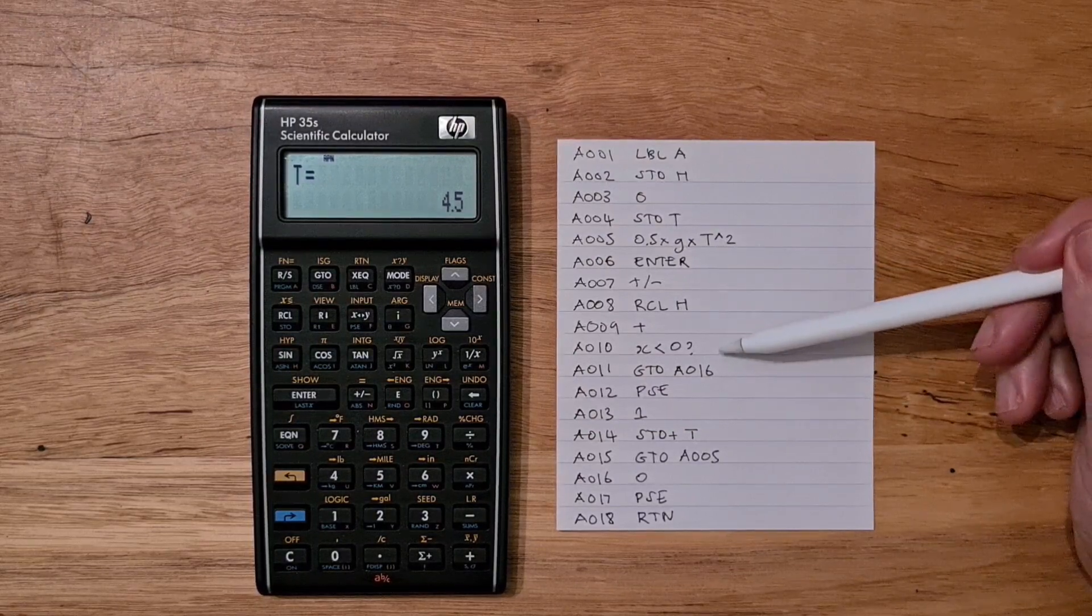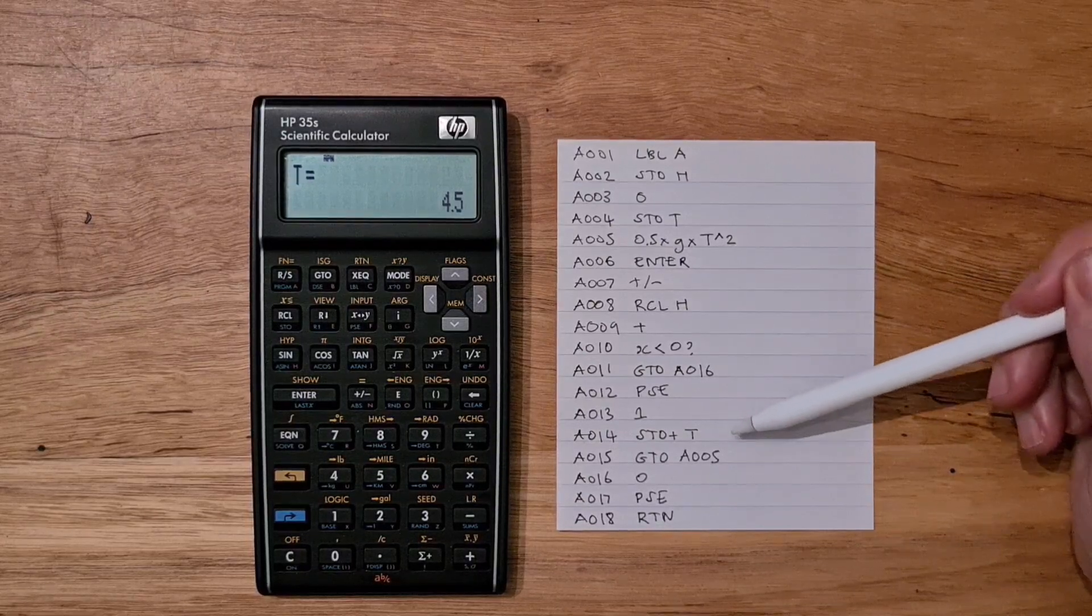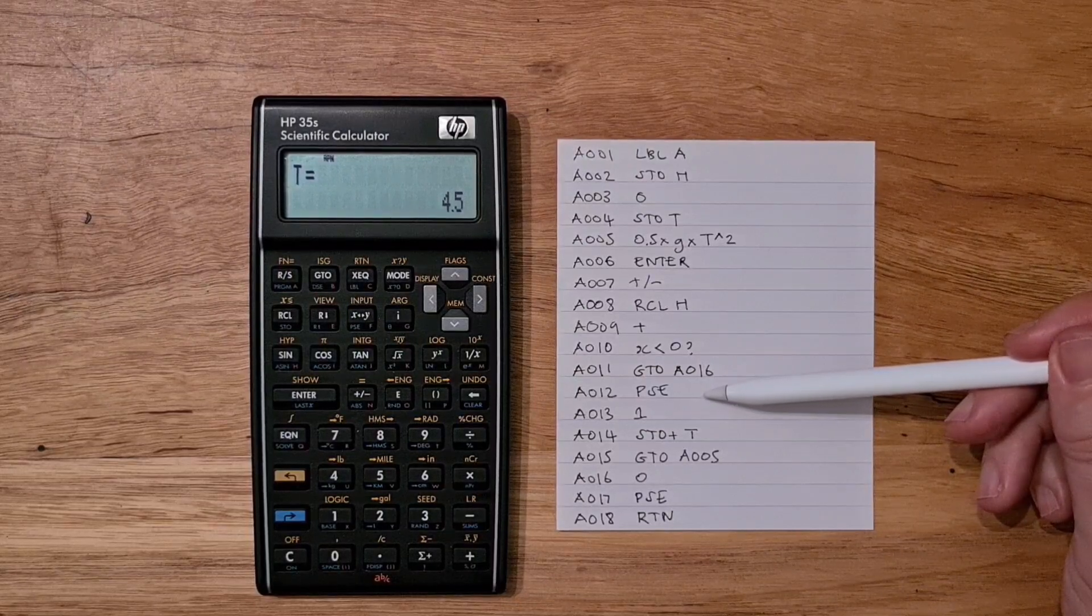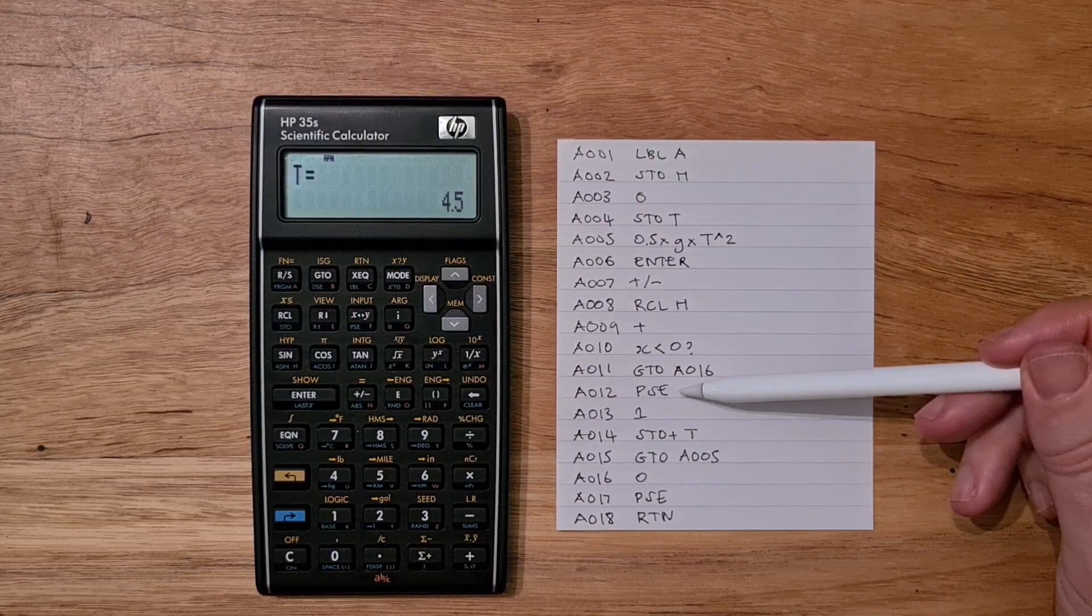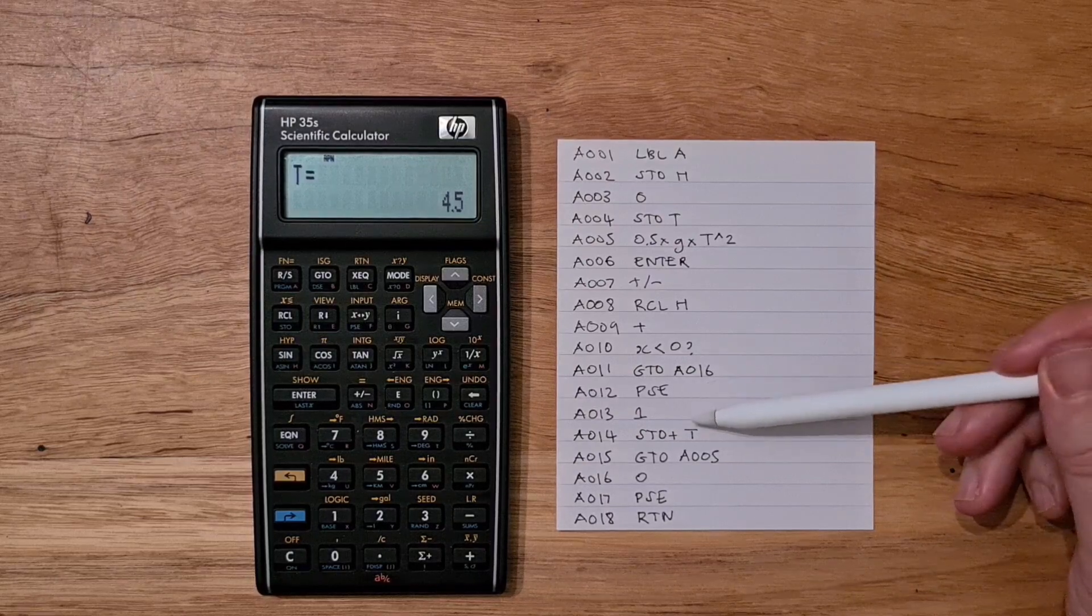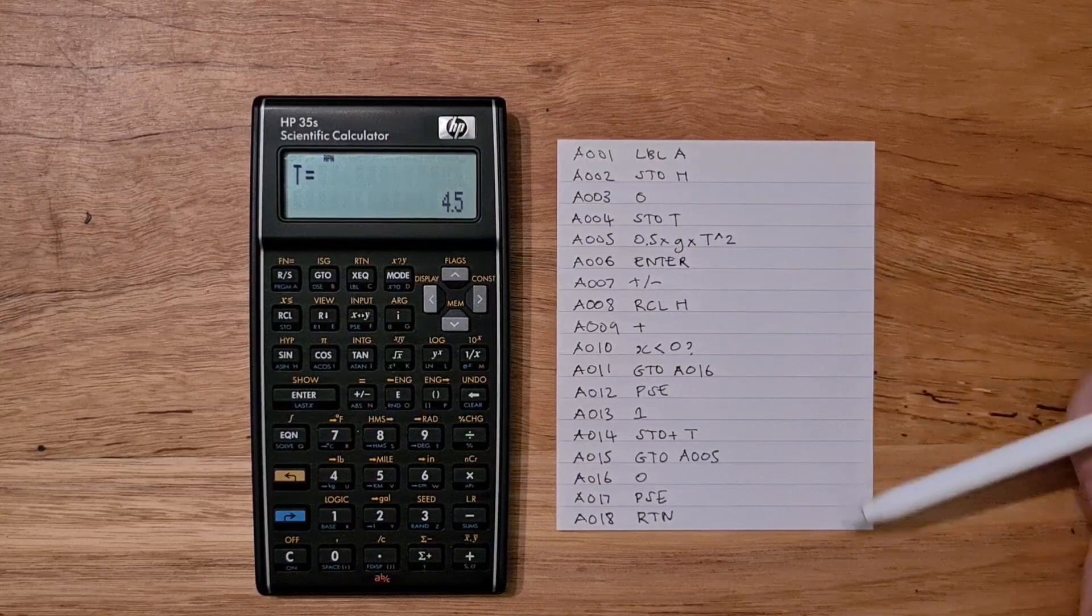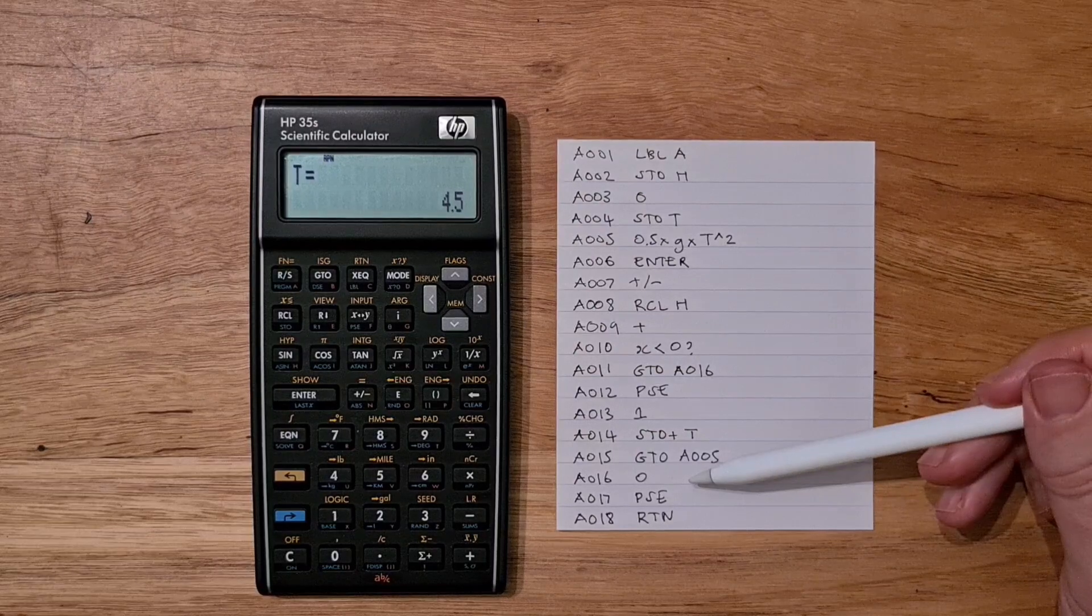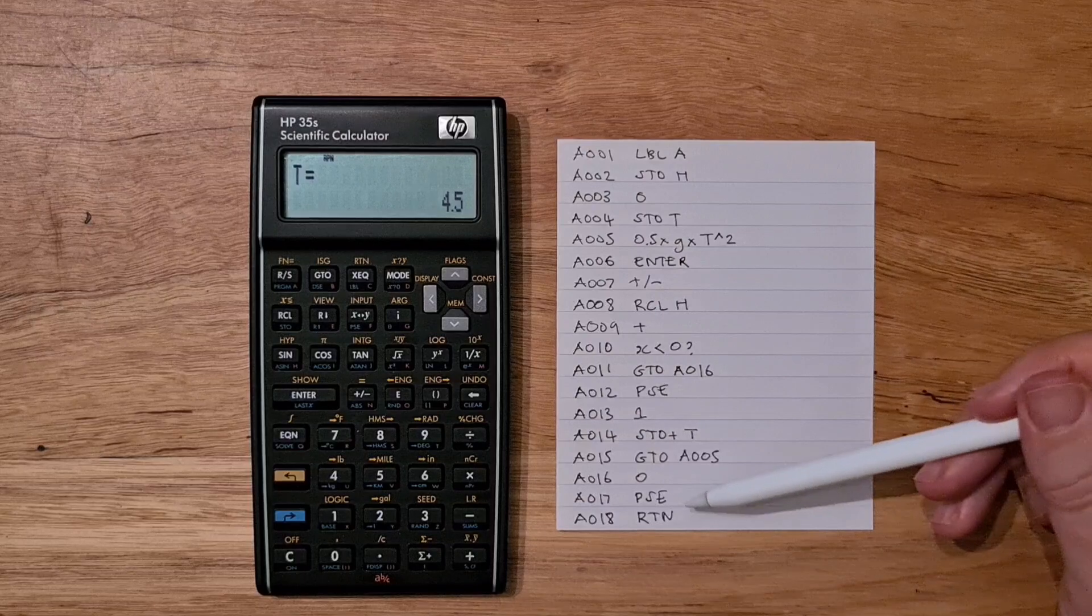If that is less than zero, then we fall through the conditional. The PSE instruction prints out the height after that number of seconds. Then it increments T and loops back to the start of the program. Otherwise, if the height is now negative, we just print out zero and return.